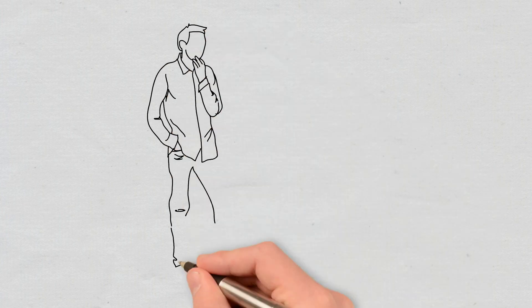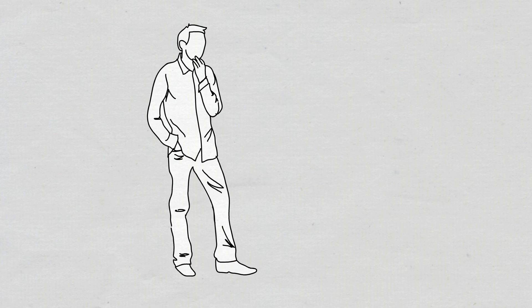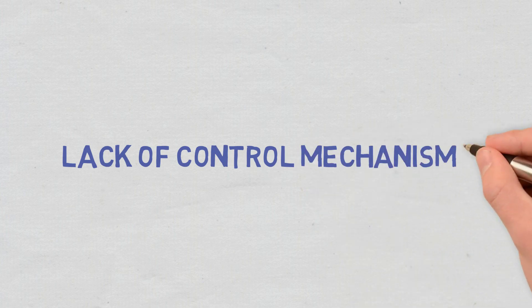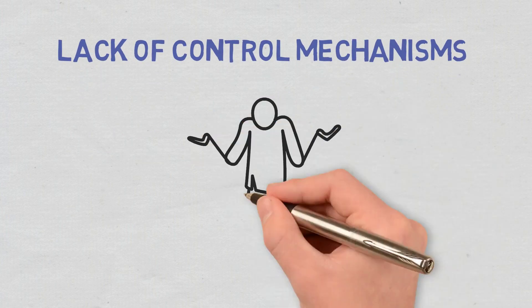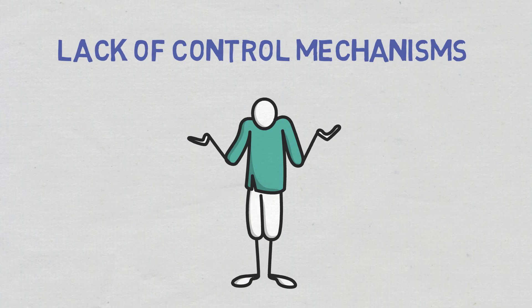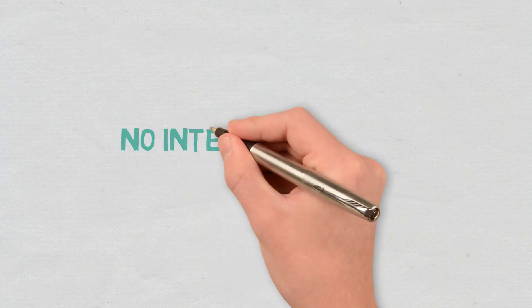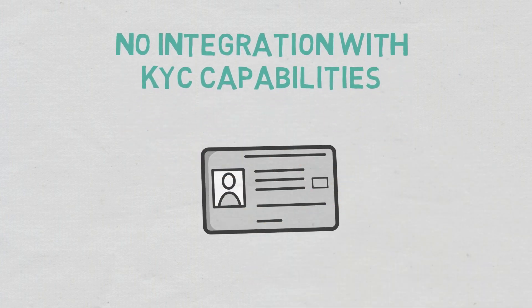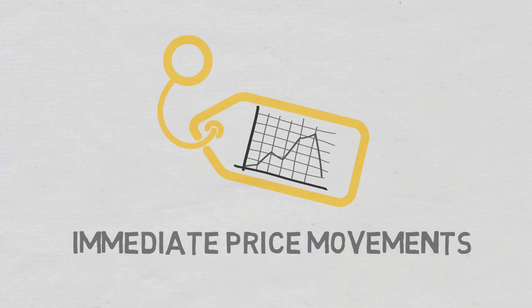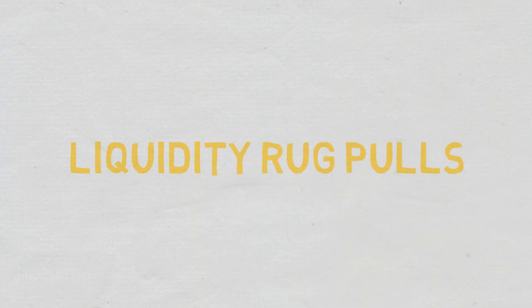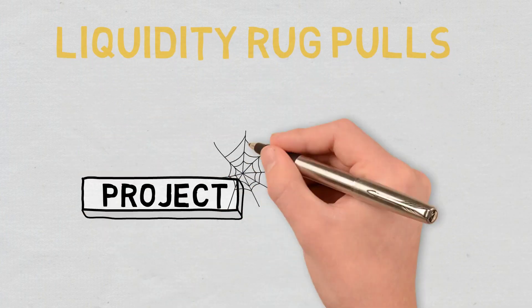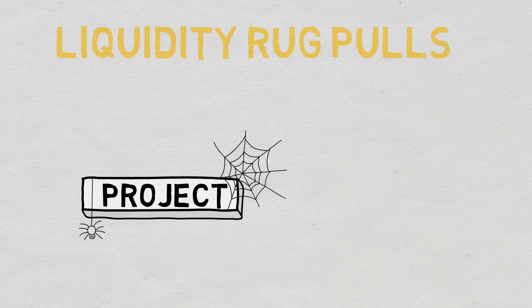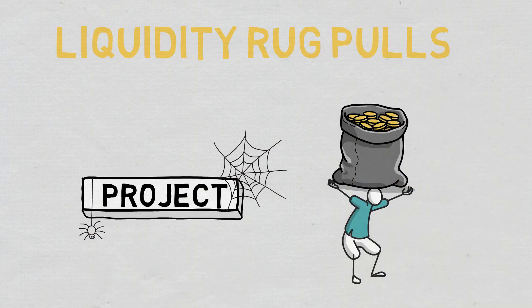IDOs are not free of drawbacks. Some of their disadvantages are: Lack of control mechanisms. Fundraisers have no control over who buys tokens and how many they buy. No integration with Know Your Customer capabilities. Personal identifiable information for investors is not recorded. Immediate price movements and liquidity rug pulls, or malicious maneuvers where crypto developers abandon the project and run away with the funds raised from investors.